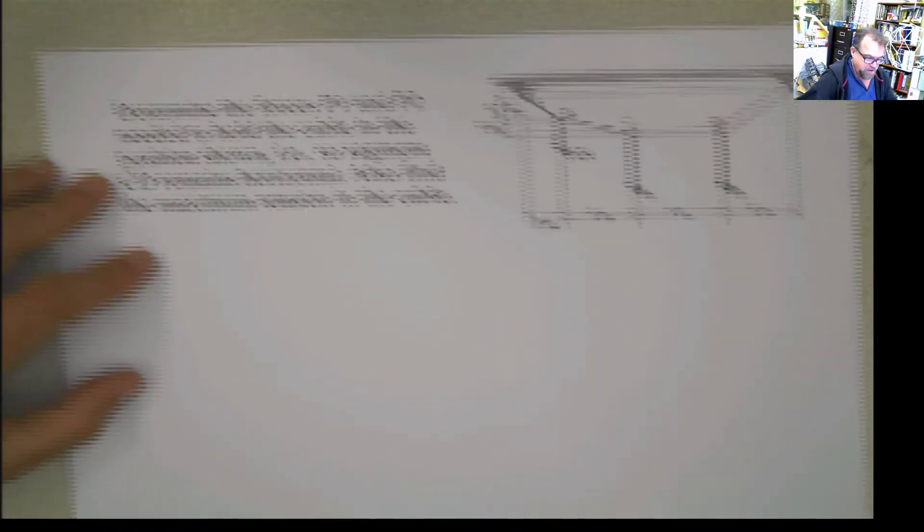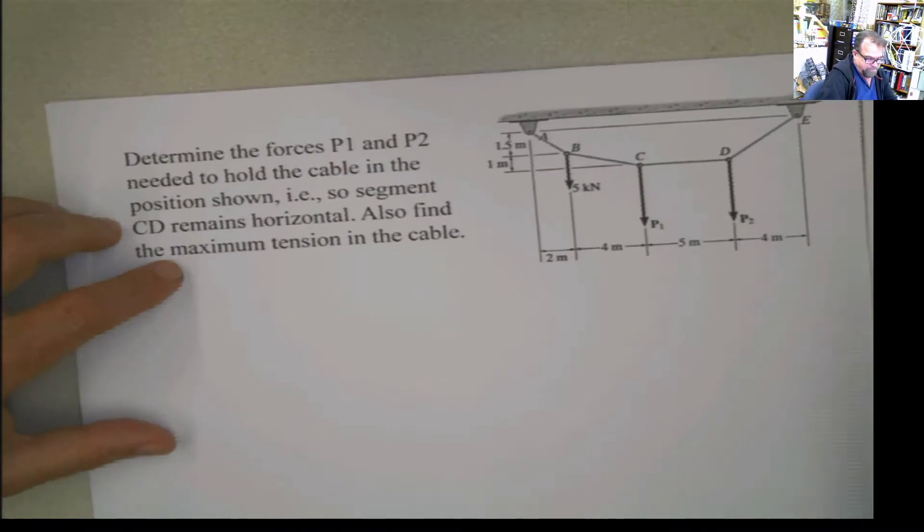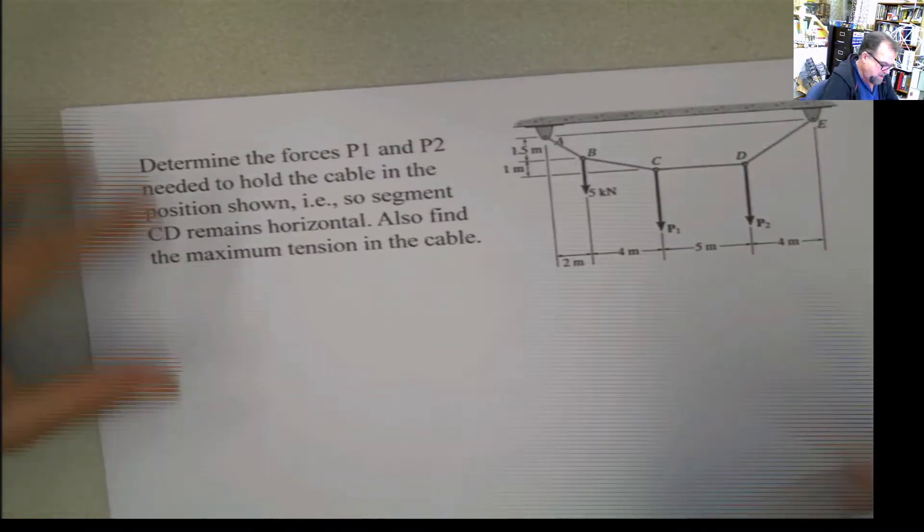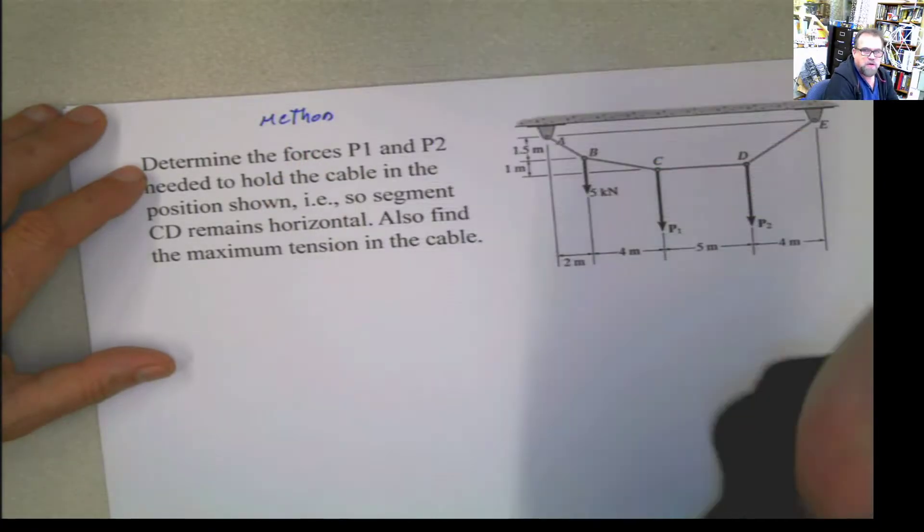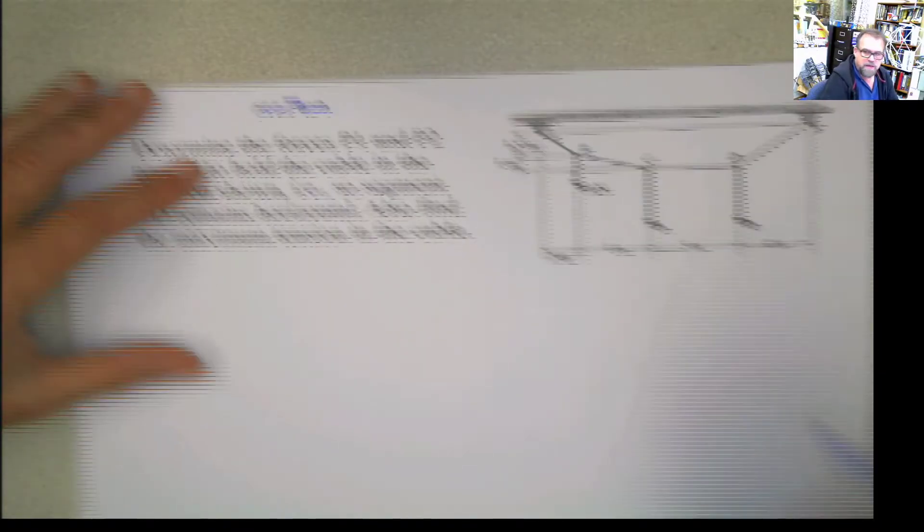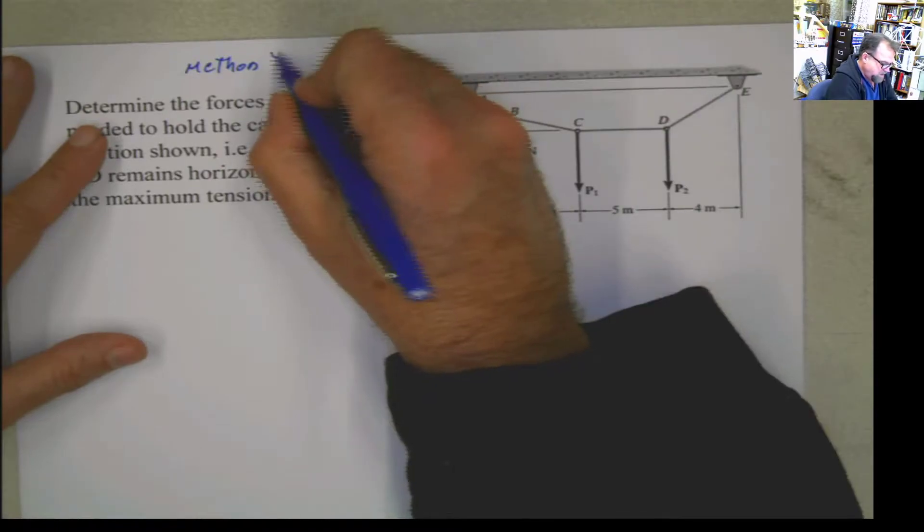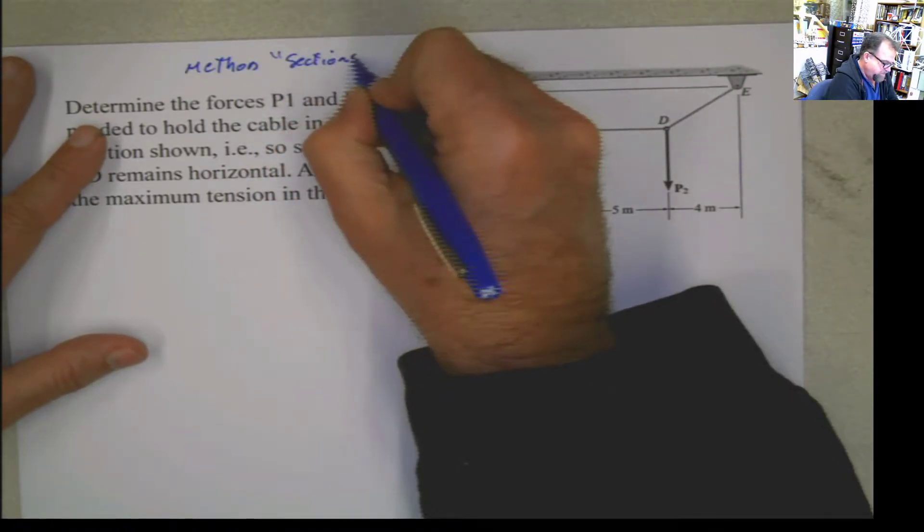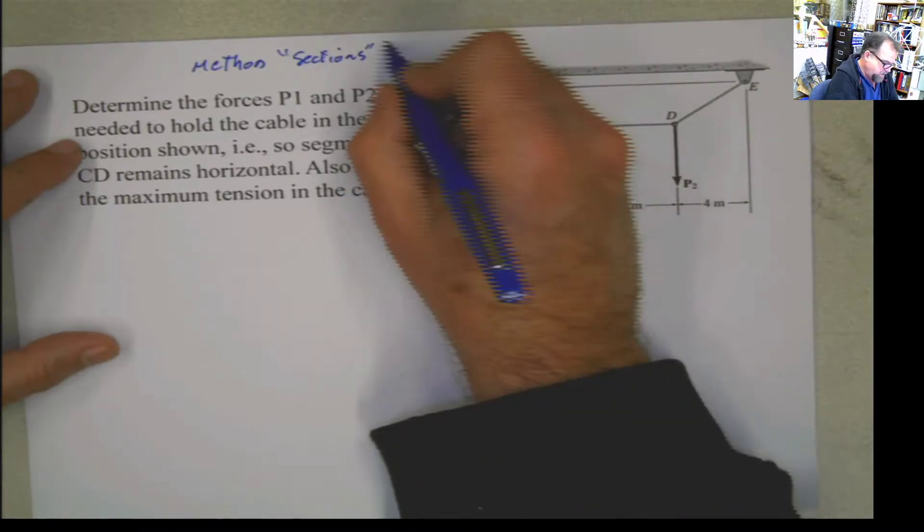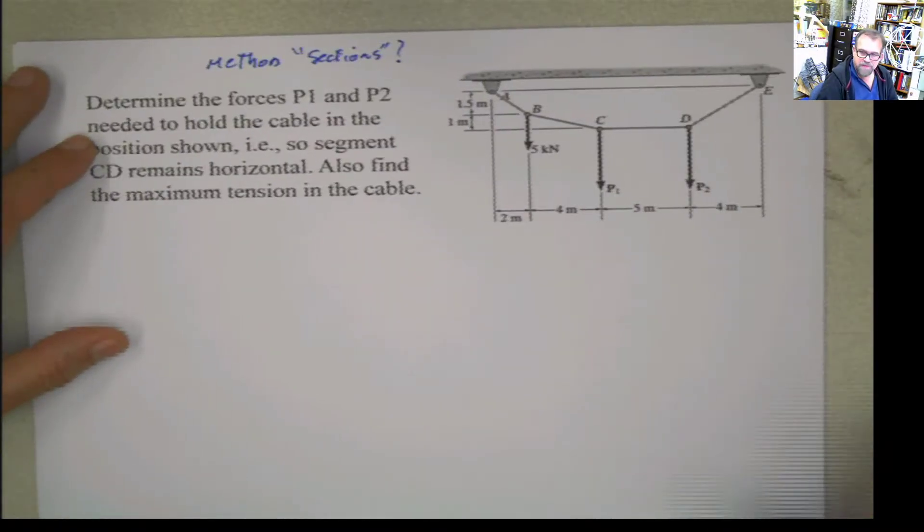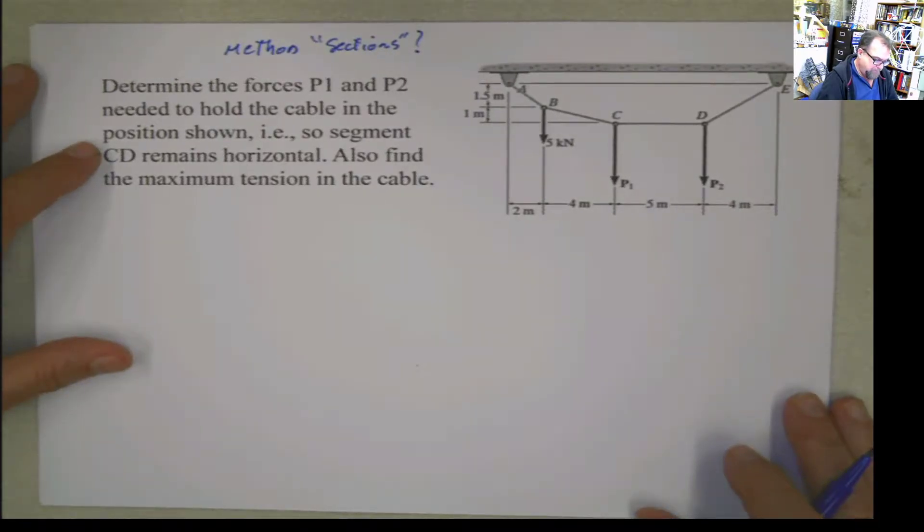Let's call this the method of sections, which is not necessarily how it's called, but the other one wasn't called the method of the joints either way. So this is the method of sections for cables.